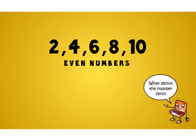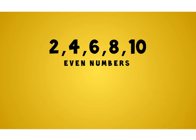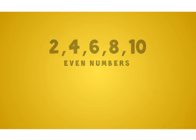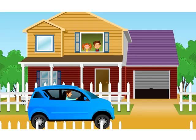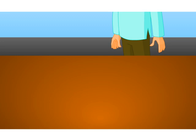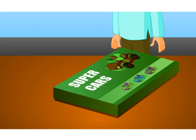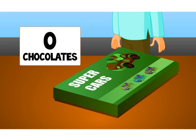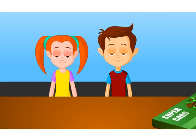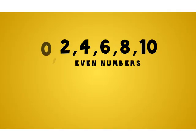What about the number zero? That's interesting. Imagine if Jack and Tina's father did not bring chocolates — then there would be zero chocolates, which means both Jack and Tina do not get any chocolates and obviously there is no left over. So, zero is also an even number.